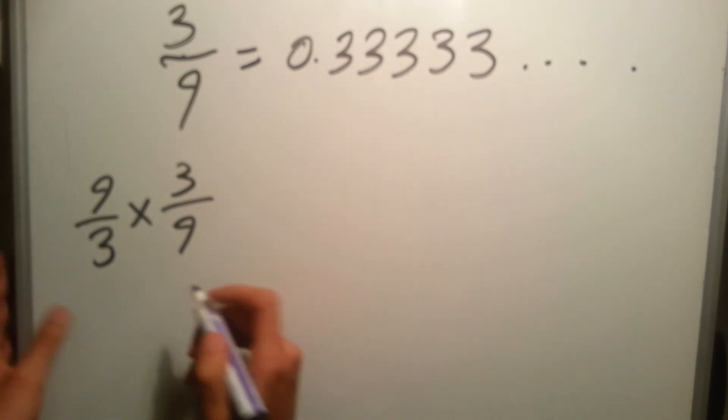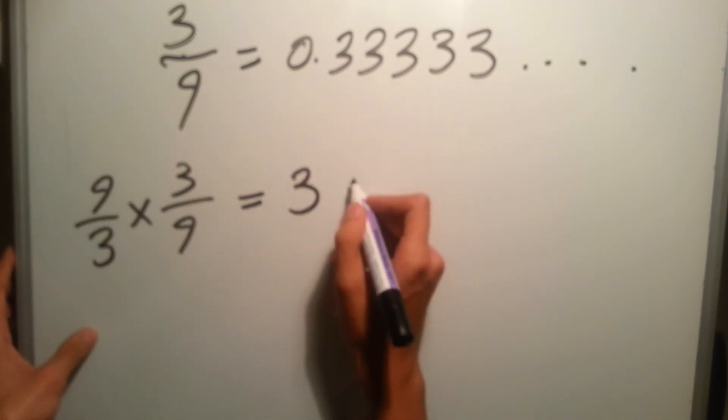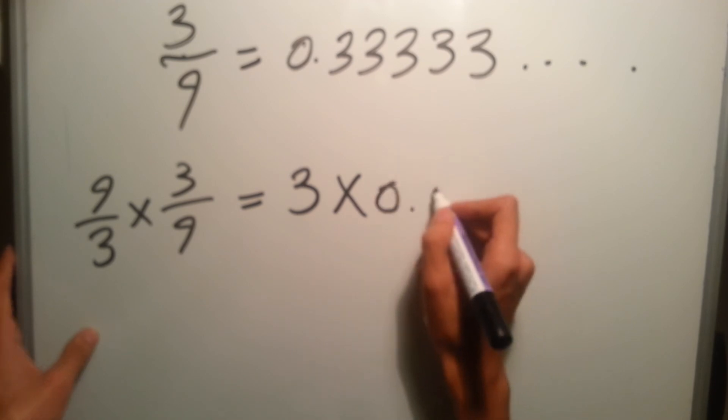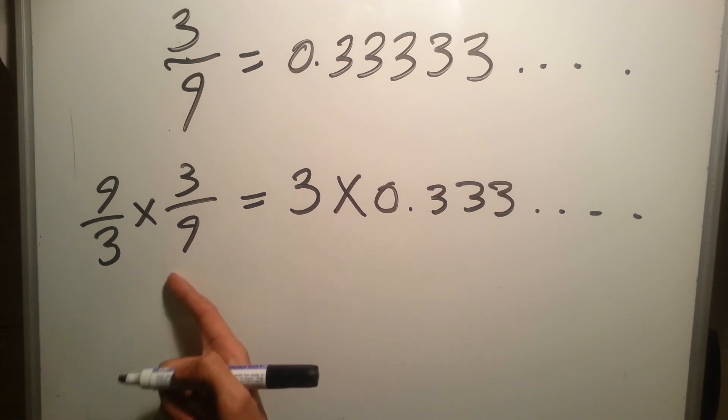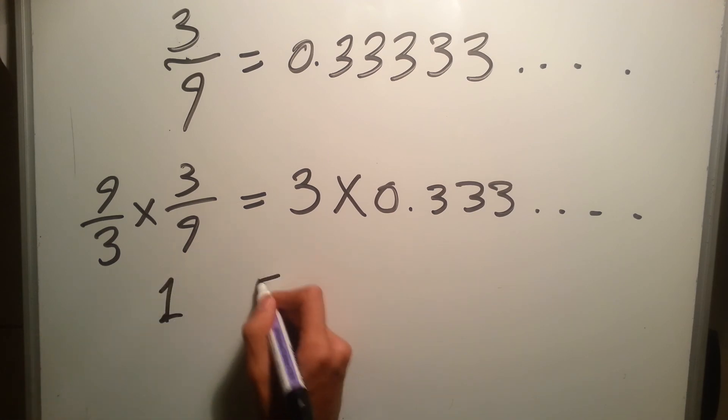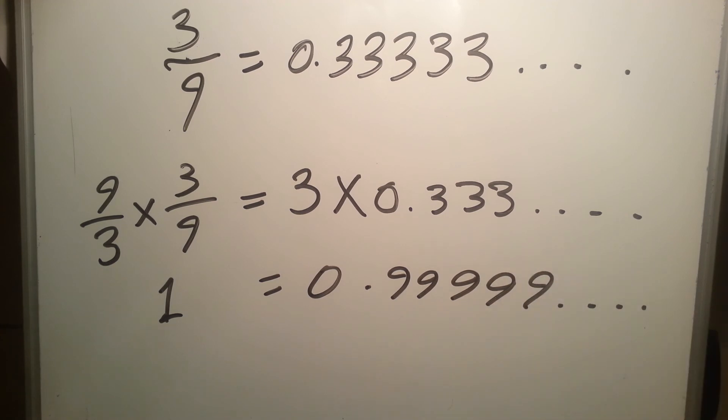If you multiply this side, 3 over 9, with 9 over 3, which is basically 3, you'll have it equal to 3 times 0.333 periodic. However, this side equals 1 while this one equals 0.999 up to infinity.